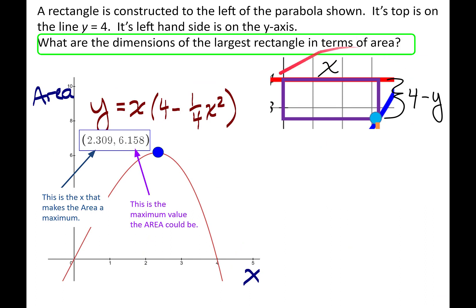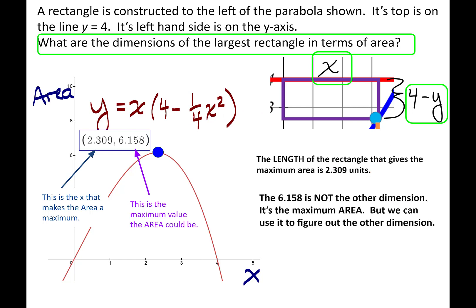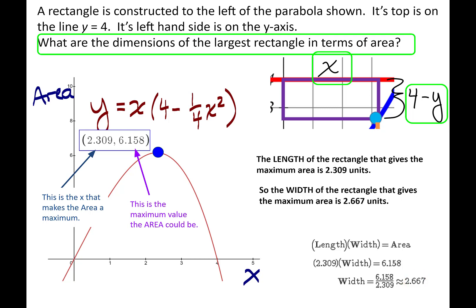Here's the rectangle we care about. We found x equals 2.309, but the 6.158 is the area — not the dimension I need. The length is 2.309. For the other dimension, since I know the area, I use: length times width equals area. So 2.309 times the width equals 6.158, and solving for the width gives 2.667. And we are done with this problem.